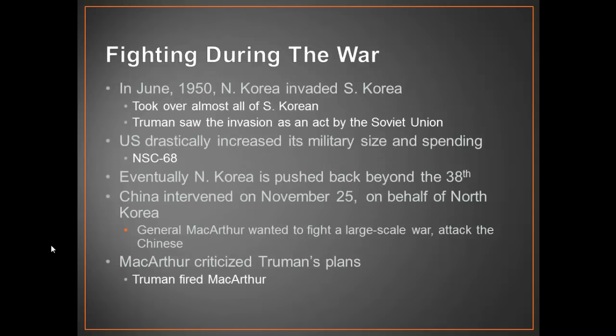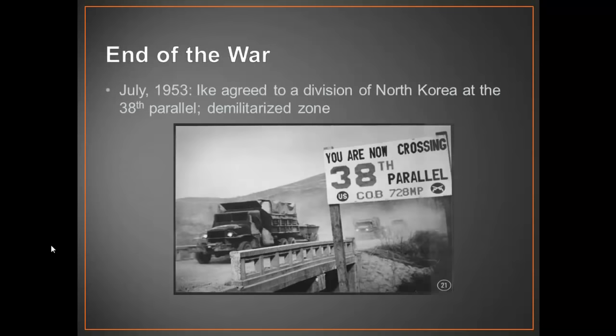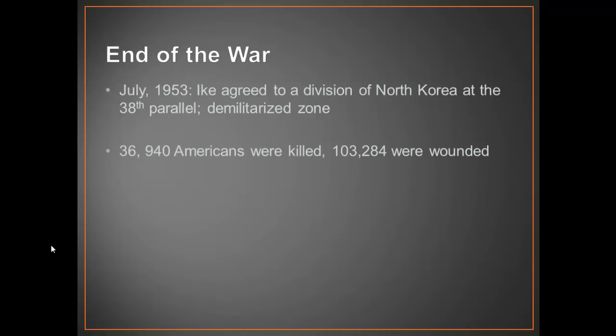MacArthur came back to the United States as a pretty big hero, and a lot of people agreed with him at that time. In July of 1953, Eisenhower, who was now president, agreed to a division of Korea at the same 38th parallel that had existed prior to the war, and a demilitarized zone was established.